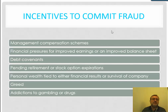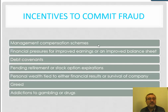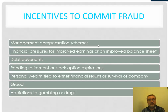The incentives to commit fraud are many. Personal incentives may include greed or addiction to gambling or drugs, but also management compensation schemes. If management is compensated with bonuses based upon specific outcomes, those are the outcomes they will focus on. If they cannot achieve those outcomes through legitimate means, they may attempt to meet compensation goals through fraudulent reporting.